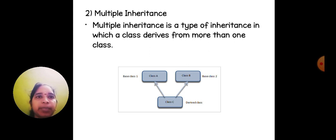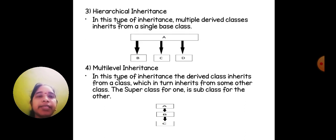Next one is multiple inheritance, which is a type of inheritance in which a class derives from more than one class. Hierarchical inheritance: in this type of inheritance, multiple derived classes inherit from a single base class.